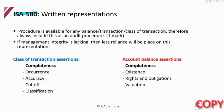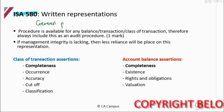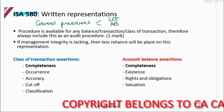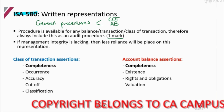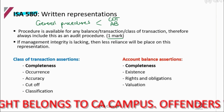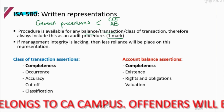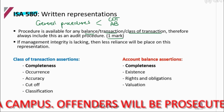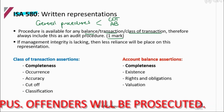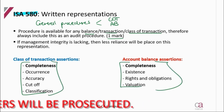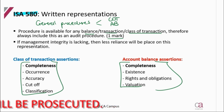ISA 580 details your written representations. We already have this as one of our general procedures for both class of transactions and account balances, so we always need to remember to put it down for one mark. Be specific to the assertion if the required is asking you for a specific assertion, but other than that you can just say written representation for the balance, the individual transaction or the class of transaction, and for the assertions that are applicable. If a required asks you to audit one specific assertion, then put that down for that specific assertion.